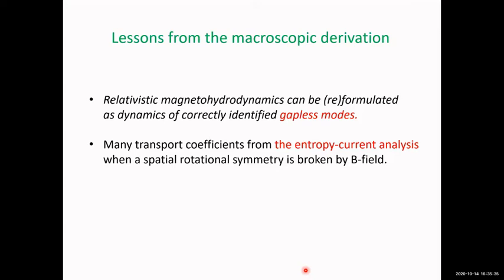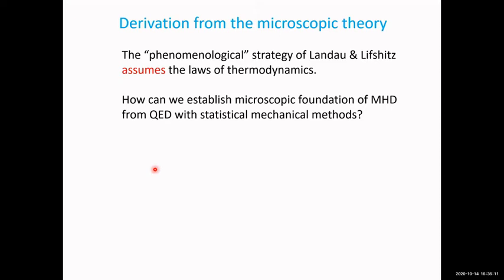So this is the basic story of macroscopic derivation. The lessons are: first, we identify gapless modes where magnetic field is included but electric field is not included as a basic variable. If we perform the entropy current analysis, we get many transport coefficients because of the absence of full rotation symmetry. The natural question is how we can derive MHD from a microscopic theory — specifically QED.